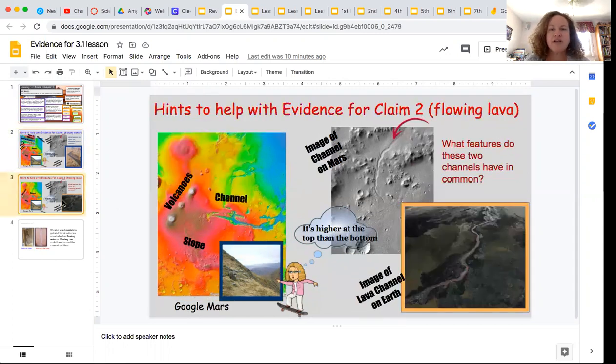And here is the evidence for claim two, which is flowing lava. We've compared it to other images of landforms that were formed by flowing lava on Earth. And we also noticed that the volcanoes are at the top of the slope in which the channel sits.